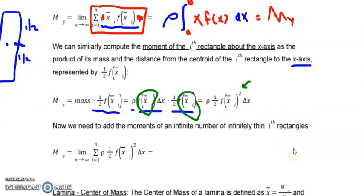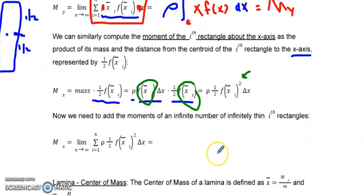And of course, just like with the moment with respect to y, what I want to do is have an infinite number of infinitely thin rectangles. And so I take my delta x, and I rewrite it as dx. I'm going to pull my rho out in front. And instead of this limit notation, what I really want is actually, my one half can go out in front too. So I can have a rho over two out in front, my limits of integration will be from a to b.